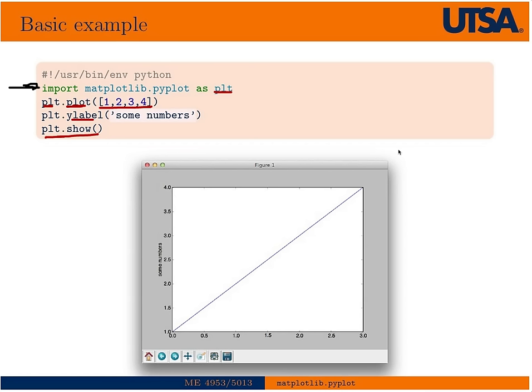And that'll produce this figure here, and you can see that it basically plotted the straight line. Again, if you only give it one array, then it's just going to plot the numbers 1, 2, 3, 4 against the indexes 1, 2, 3, 4. So that's how that works.